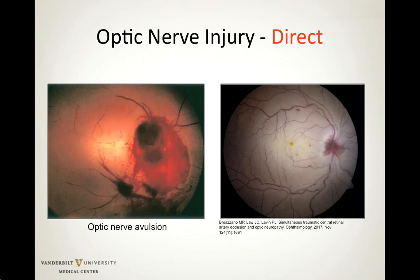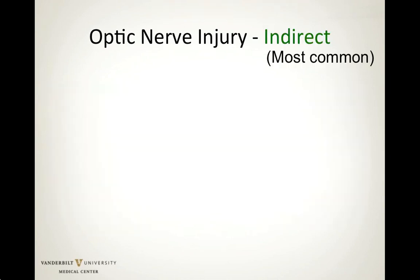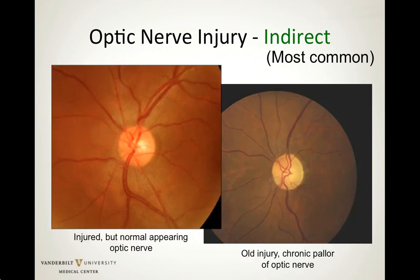Patients with direct optic nerve injury will have markedly reduced vision — likely bare light perception to no light perception — and inevitably a relative afferent pupillary defect. Indirect optic nerve trauma is the most common form. It can occur with minor head injury through indirect transmission of forces through the orbital bones, damaging the optic nerve or affecting its vascular supply. The exam may appear normal initially; however, vision will be affected and there will be a relative afferent pupillary defect. The appearance may change one to two months later, appearing more pale due to atrophy and axonal death.